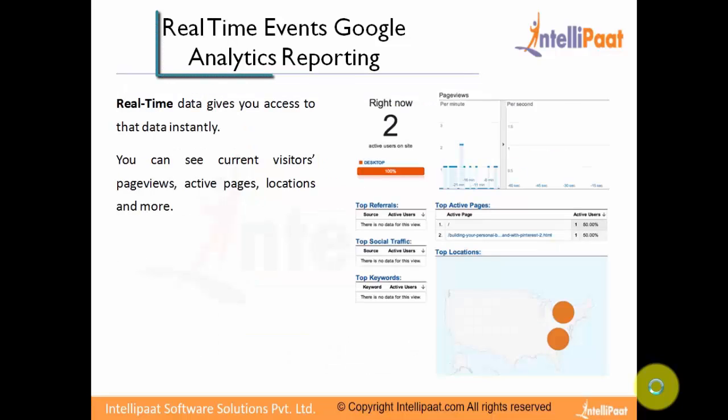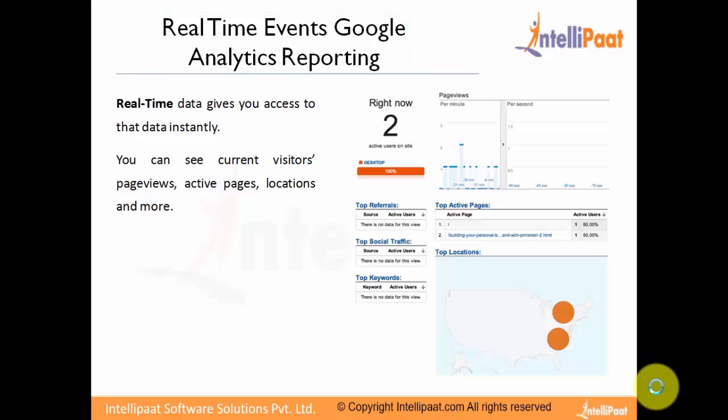Real-time data in Google Analytics reporting. The real-time data gives you access to data instantly. You can see current visitors, page views, active pages, locations, and more. On your right-hand side, you can see there are currently two active users on the site, both coming from desktop. You can also see the top referral sites, top social traffic, top keywords, and which are the top active pages being viewed.